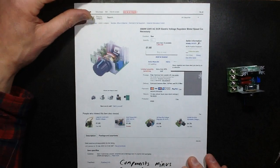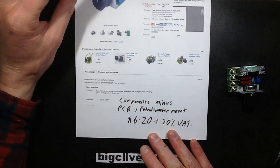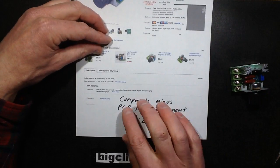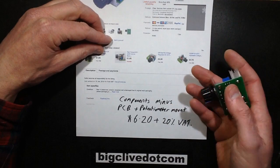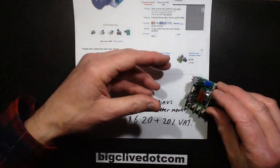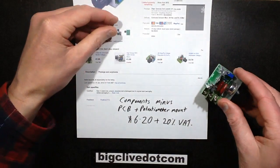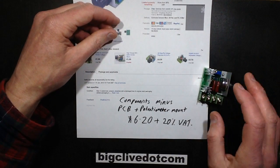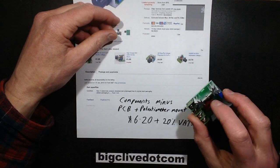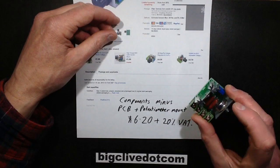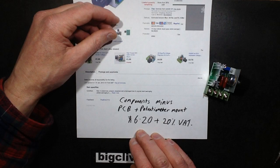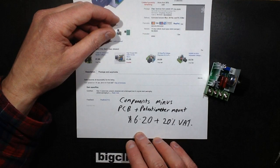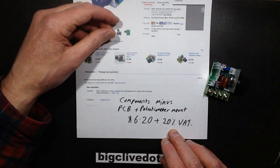I did some sums and priced the components up. If I bought these components minus the PCB and minus this potentiometer mount, the cost, and I also didn't include the resistors because they are just what I regard as consumables and hardware, things like screws and things like that. The combined component cost for small quantities from my supplier was £6.20 plus 20% VAT.